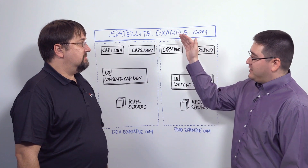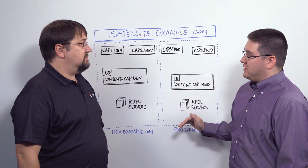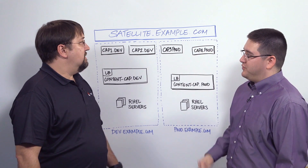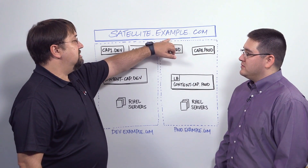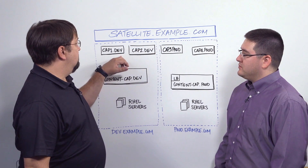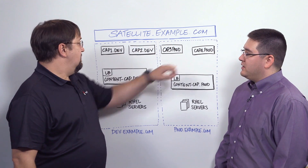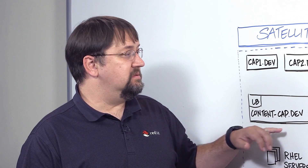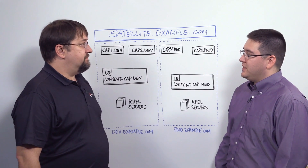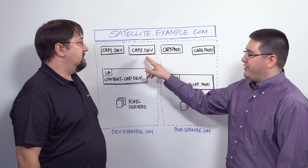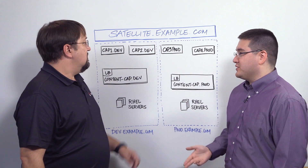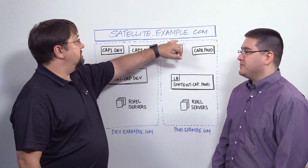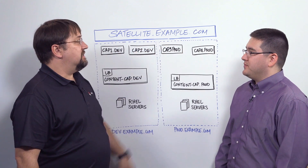As far as deploying each of these pieces, let's say the customer starts out with a clean environment — what would you start with? I would start with installing the management head satellite server, then install the remote capsule servers, and then, depending on the environment, the load balancers. Can you tell me a little bit more about these capsules — are they appliances or are they just RHEL servers? They're RHEL servers, which we run an install script that would automatically register them as capsule servers in the satellite server.